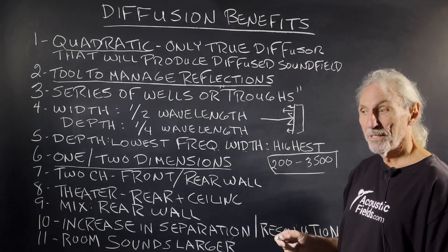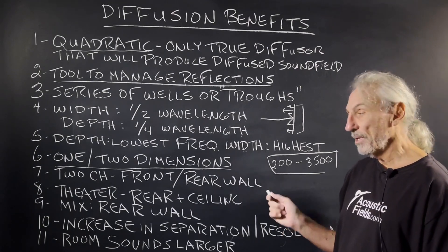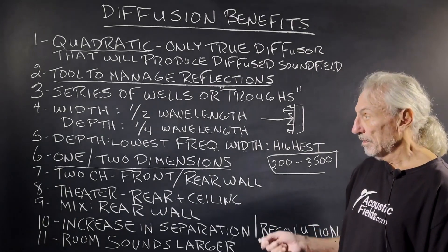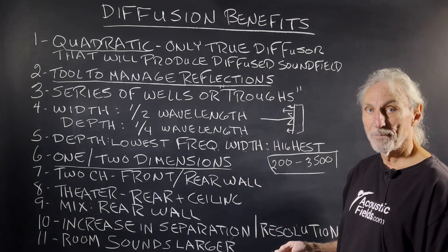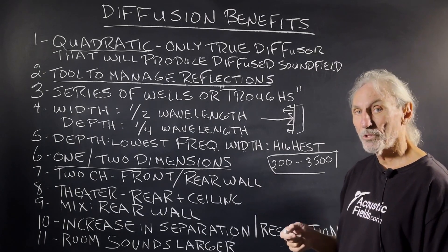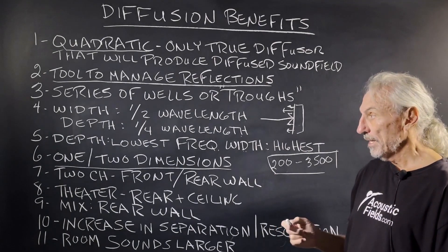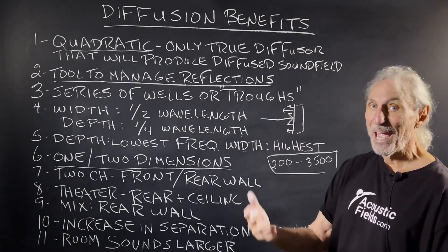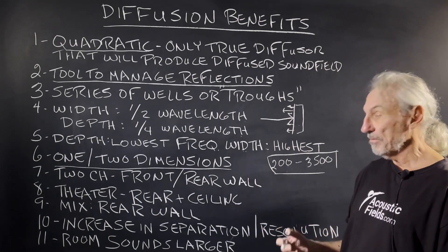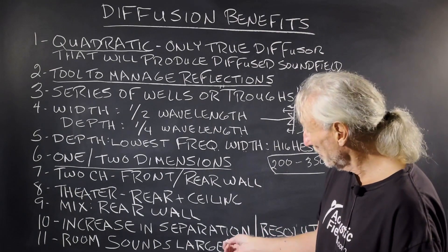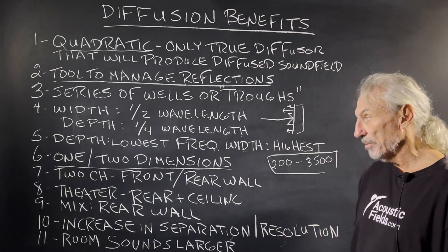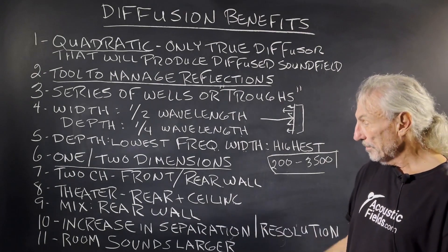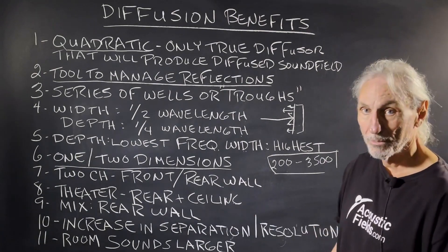A lot of mix engineers want that rear wall out of the picture — they don't want to hear that reflection off the rear wall, but their rooms are small. In that case we'll work with two dimensions because it can be installed at a smaller distance and achieve the same result. One dimension actually adds a bit to presentation value: it will increase your separation, which gives you resolution and makes the room sound larger. For two-channel, we like the front and the rear; for theater, the rear and the ceiling; and for mix rooms, the rear wall.